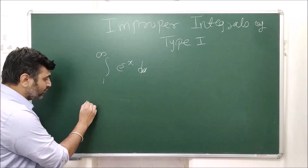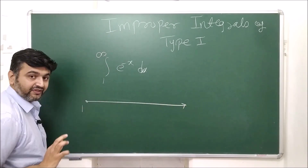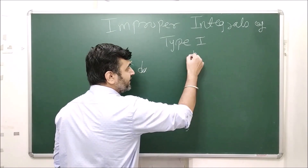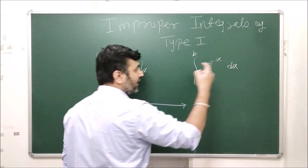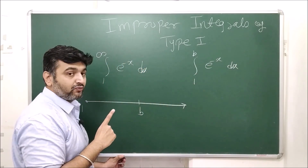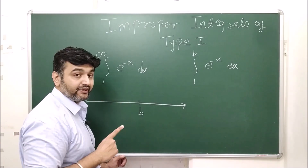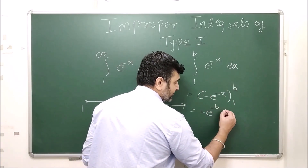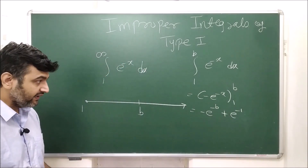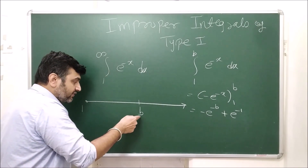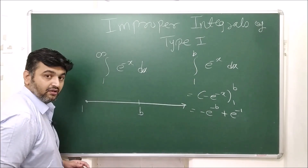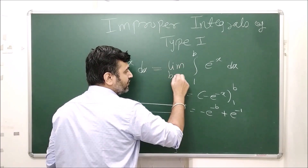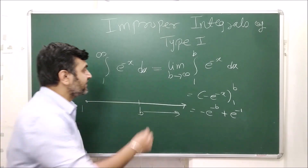Let me tell you the correct way. The problem is that the domain is unbounded: 1 to infinity. What you do is bring a variable B into the picture — some finite number B. Now integrate from 1 to B: e^(−x) dx. Is the function continuous? Yes. Is the domain closed and bounded? Yes. Can I apply FTC2? Yes, because the antiderivative exists. The antiderivative is −e^(−x), evaluated from 1 to B, giving −e^(−B) + e^(−1). So by removing infinity and using B, we enter the Riemann world.